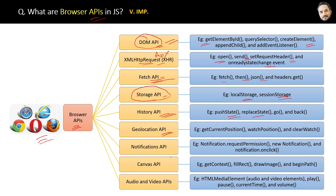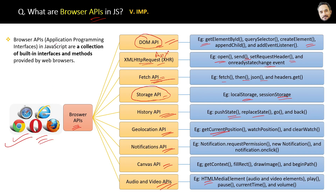Similarly, we have methods for the Geolocation API to track the user's location via the browser. Then we have Notification APIs, Canvas APIs, and lastly Audio and Video APIs. All of these are provided by the browser only. Now you understand what browser APIs are — the definition is: browser APIs in JavaScript are a collection of built-in interfaces and methods provided by web browsers.